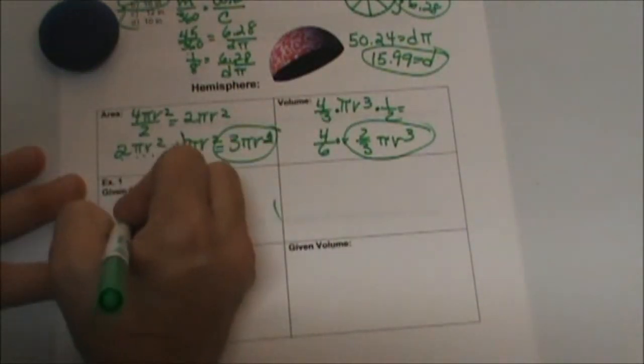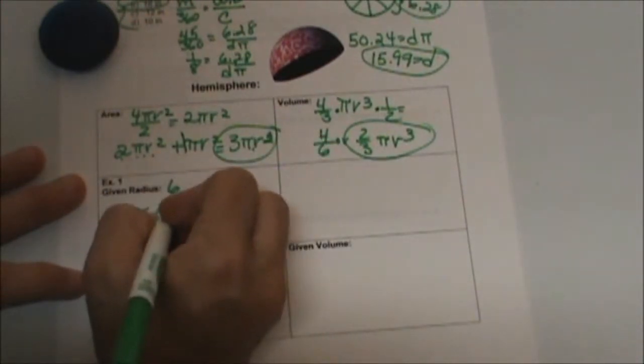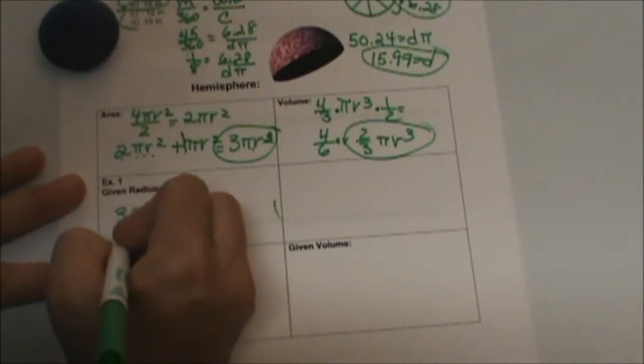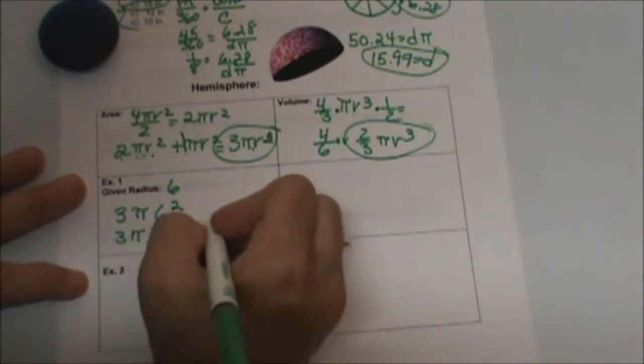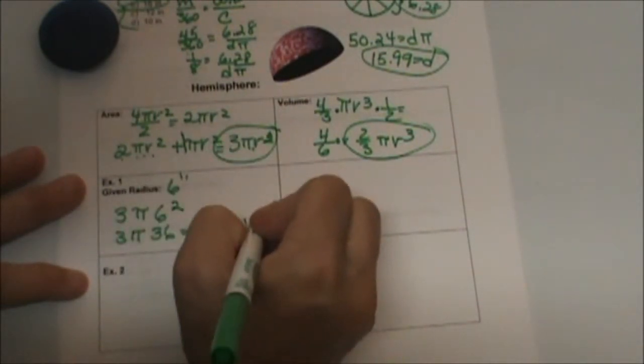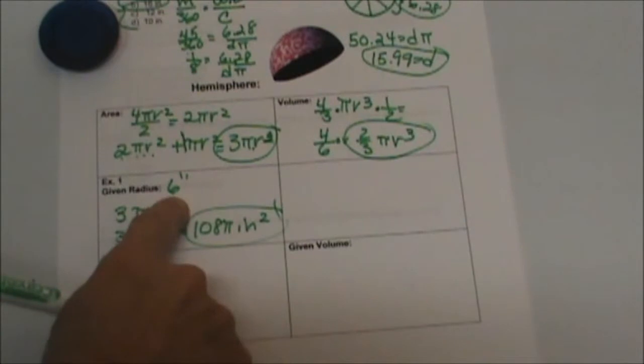Okay, so the surface area is going to be 3 pi times the radius which is 6 squared. 6 squared is 36. So 3 times pi times 36. 3 times 36 is what? 108 pi. And we'll make that inches squared. So that's how you find the surface area given just the radius.